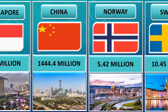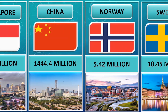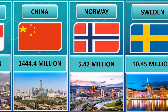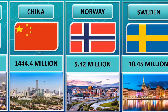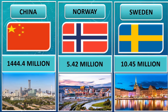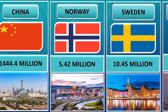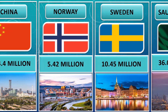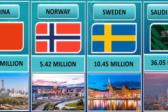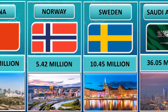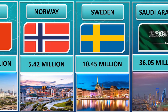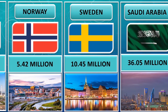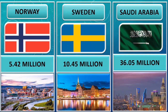Population of Norway is 5.42 million. These are the world's largest population countries. Next, population of Sweden is 10.45 million.